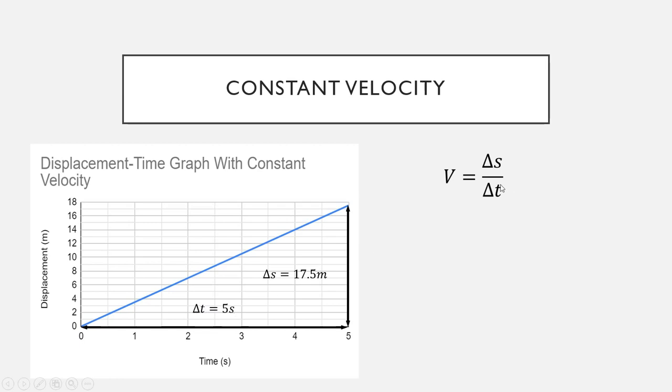And we've got our value for delta t that will go into here. So we just do that substitution to get 17.5 over 5, type that into the calculator, and you get a velocity of 3.5 meters per second. So when you want to find constant velocity, you simply take two measurements and then divide them to find the gradient, and that gives you your answer.